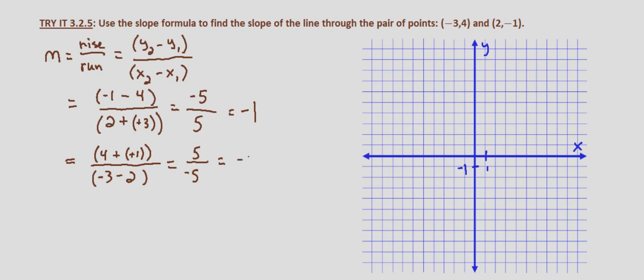And we get the same slope, and that's what I meant by it doesn't matter which point you start with first, as long as you start with the same point on top and bottom—the same x and y point on top and bottom. So the slope is negative 1.